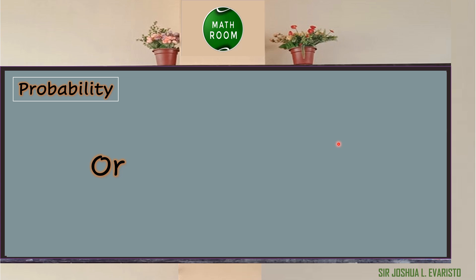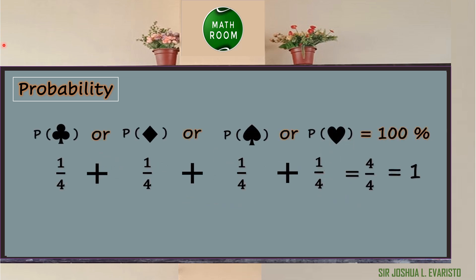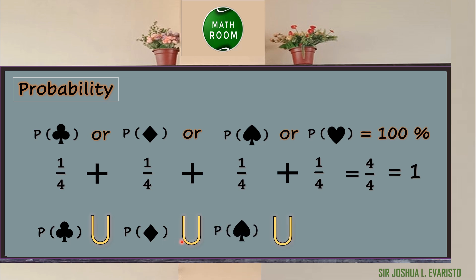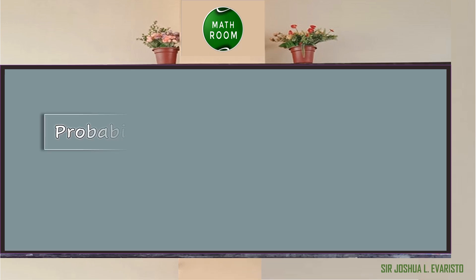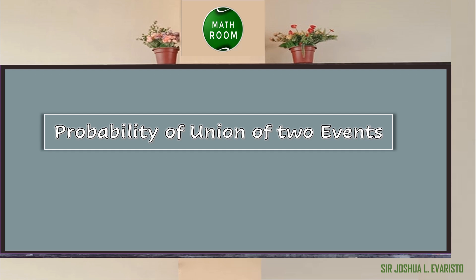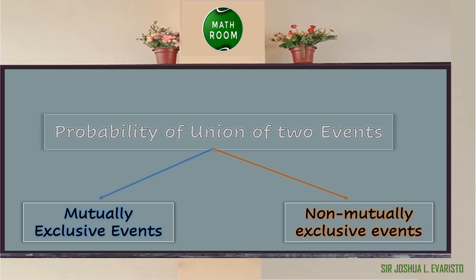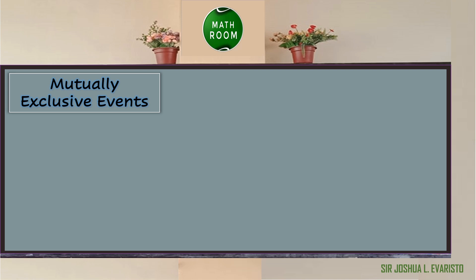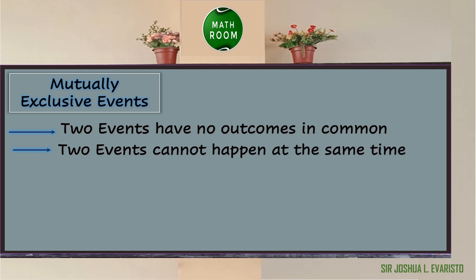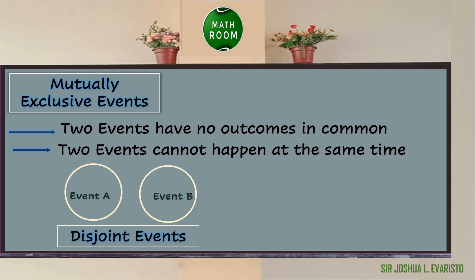When we use the conjunction OR in probability, that means addition, and we are referring to the union of two or more events. Just like in this example, we can say that the probability of getting a club, union the probability of getting a diamond, union the probability of getting a spade, union the probability of getting a heart, is equal to 100%. Two events is said to be mutually exclusive if events have no outcome in common, if two events cannot happen at the same time. This is also referred to as disjoint events and can be illustrated using two circles without overlapping, since event A is completely different from event B.